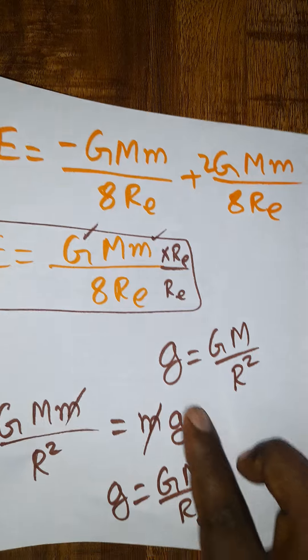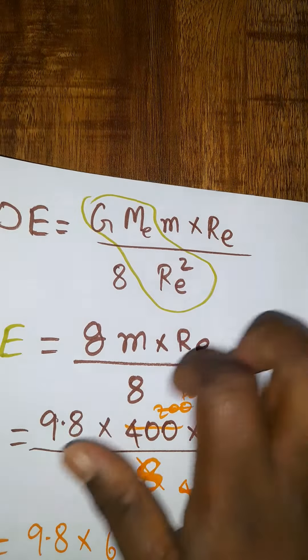I substitute and relate it with small g. If I relate with small g, the equation will become like this.